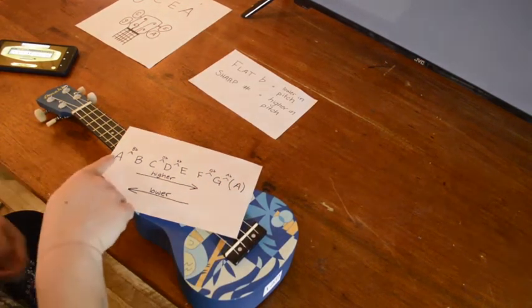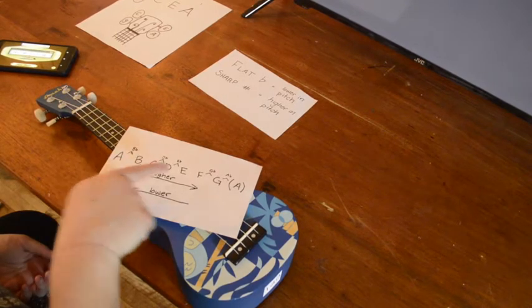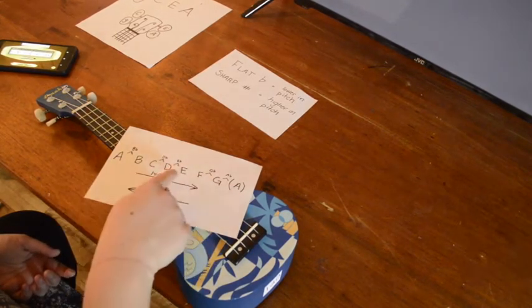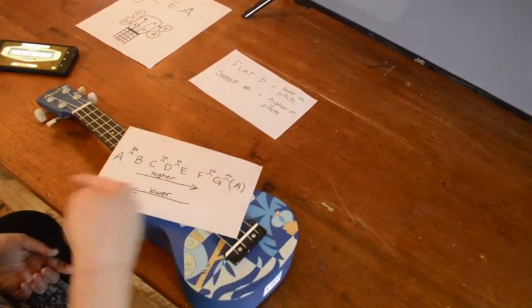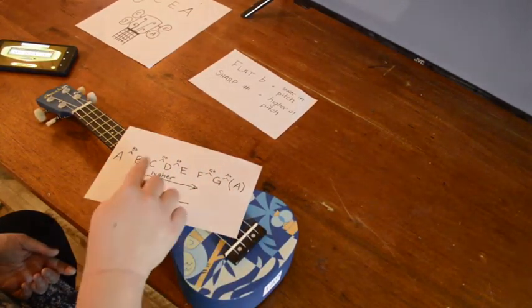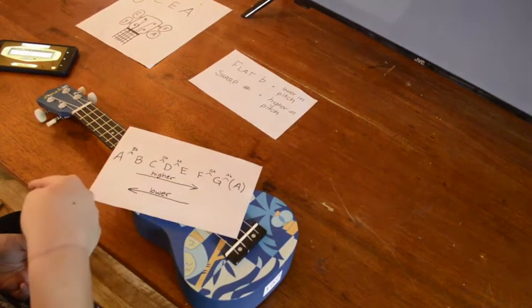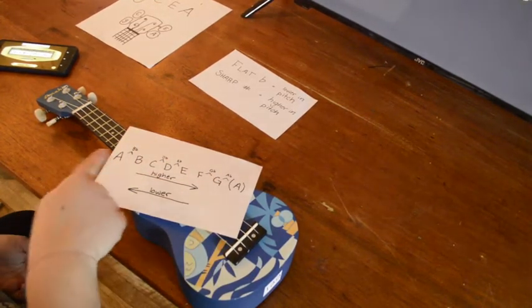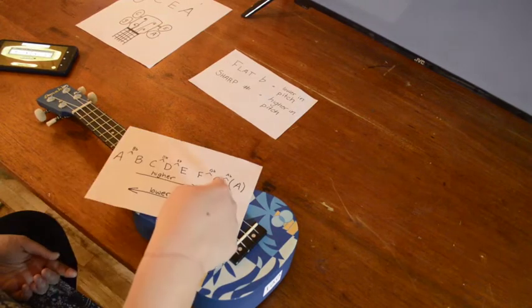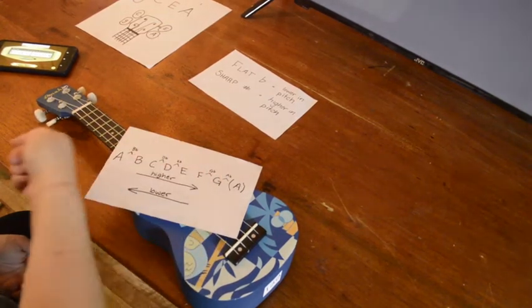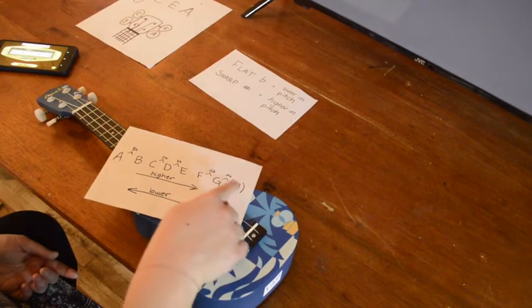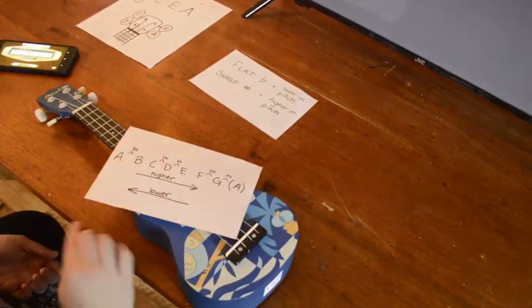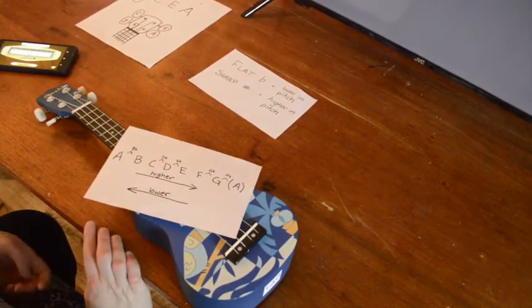So if you go from A to B you're going higher. If you go from E to F you're going higher. If you go from G to F you're going lower. If you're going from C to B you're getting lower in pitch. And here's a trick question: if you're going from A to G, there's a G lower than an A. And if you're going from this G to this A, you're going higher. So that's a little bit about the musical alphabet.